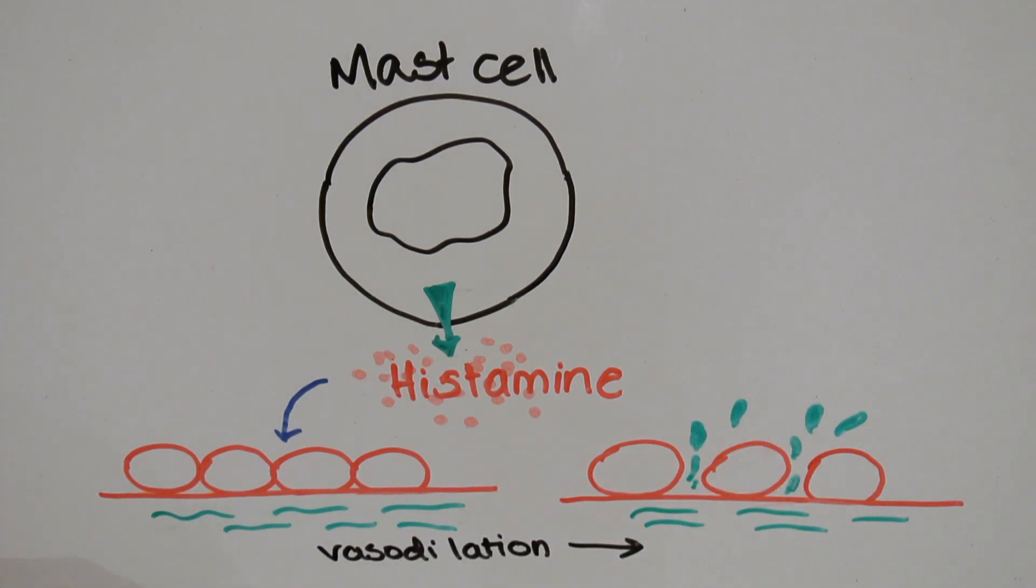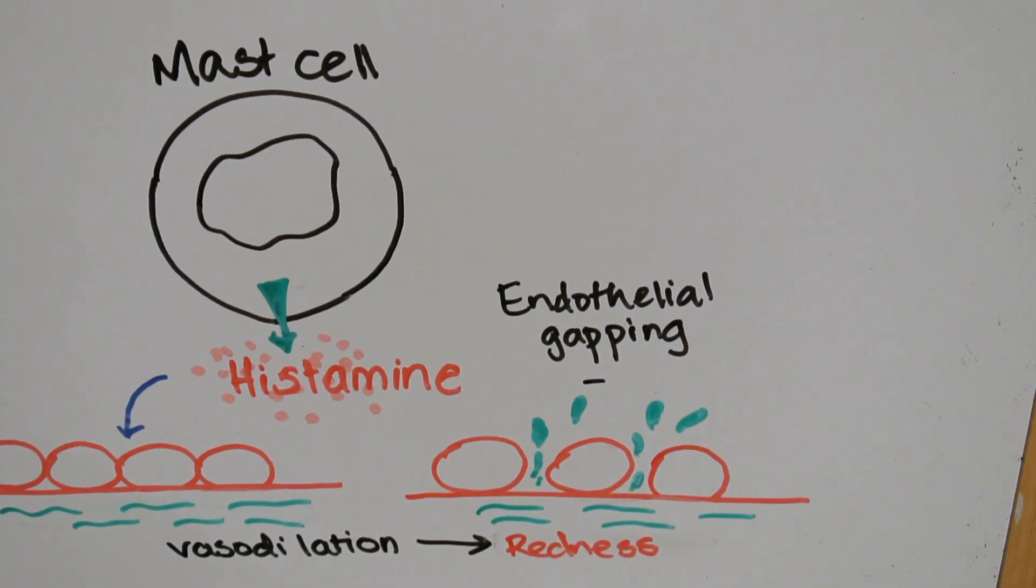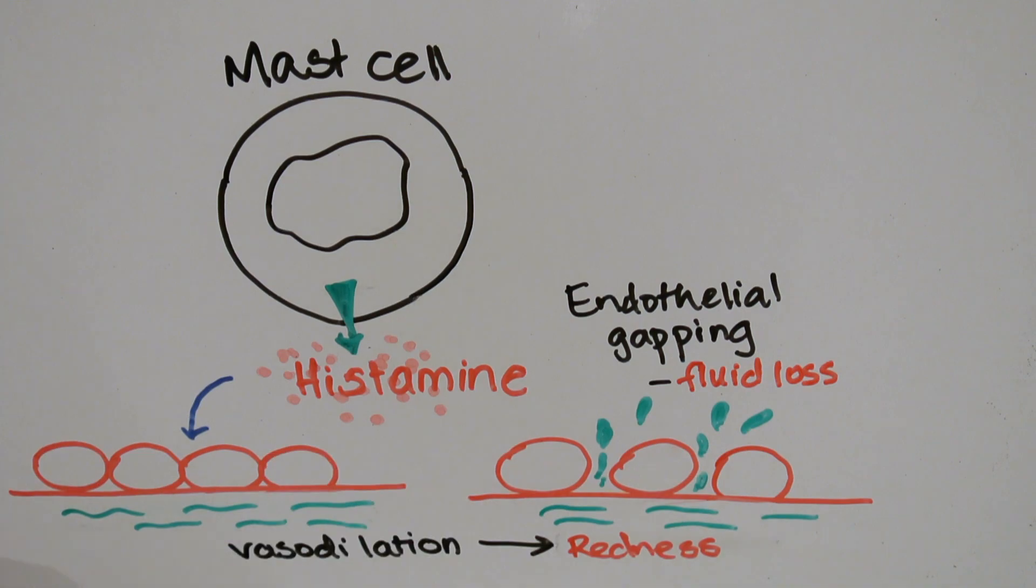When you have an allergic response to external stimuli on your skin, histamine binds to the receptors at the site and causes the build-up of white blood cells, leading to inflammation in that area.